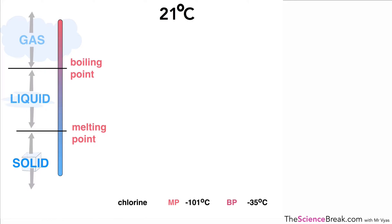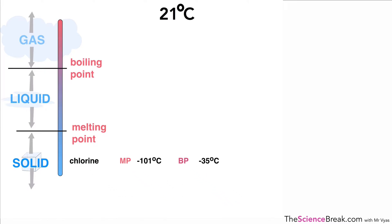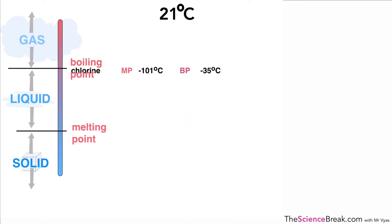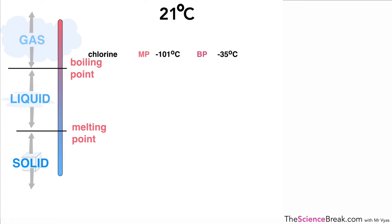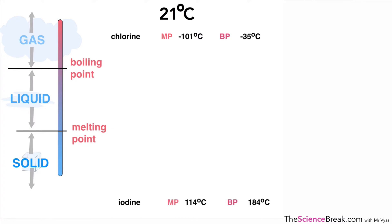Here we have the example of chlorine: melting point −101°C and boiling point −35°C. At room temperature — say 21°C — chlorine is past its melting point and also past its boiling point, since 21 is higher than −35. Therefore chlorine is a gas at 21°C.